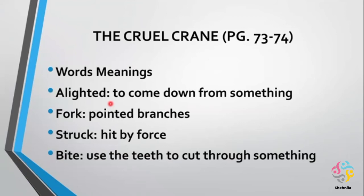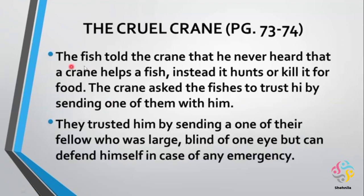Come to page number 74. There's the word 'glories' — great beauty. Then 'alighted' — alighted means to come down from something. Then 'fork' — you know fork like a spoon and fork; here it means a branch fork of a tree. Then 'struck' — struck is the past of strike — hit by force; cheez pe marna. Then 'bite' — bite means use the teeth to cut through something, but here 'bite hold' means to strongly hold with the beak.